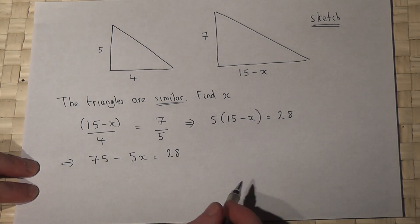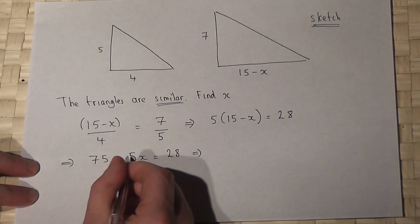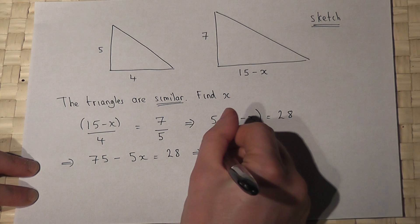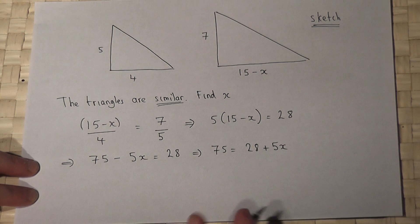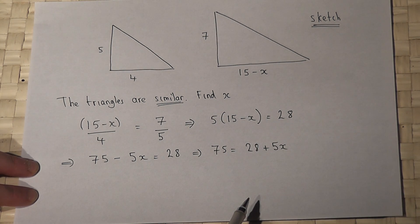Now this can be solved in various ways. I will add across the 5x to that side, then take away 28. So 75 take 28 is 47.